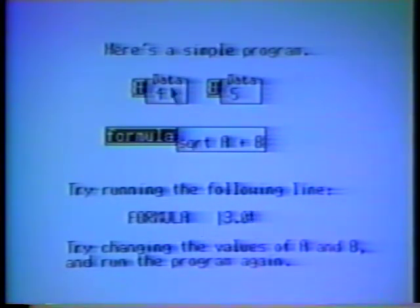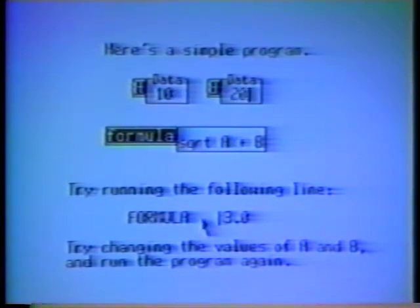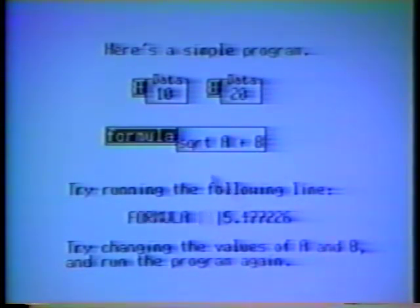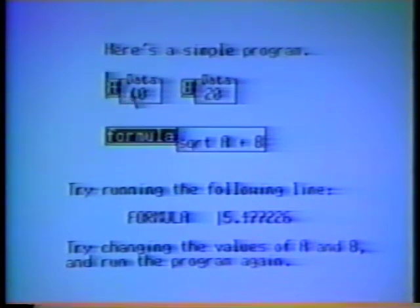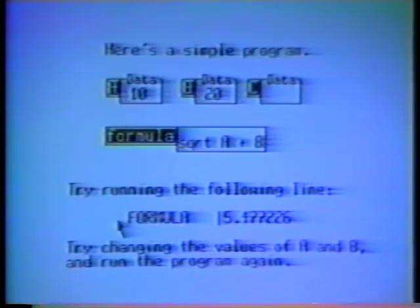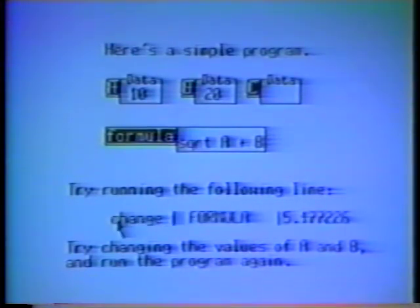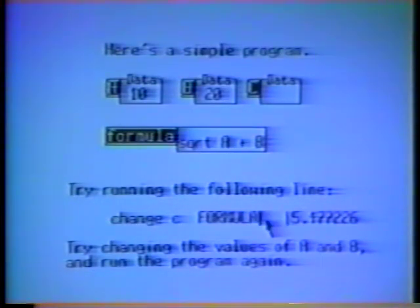We can change the value of a and b and run the program again. Let's change a to 10 and b to 20. We can make a new box called c and run a command that makes c the result of applying the formula. Notice how c changes automatically as we run the command.